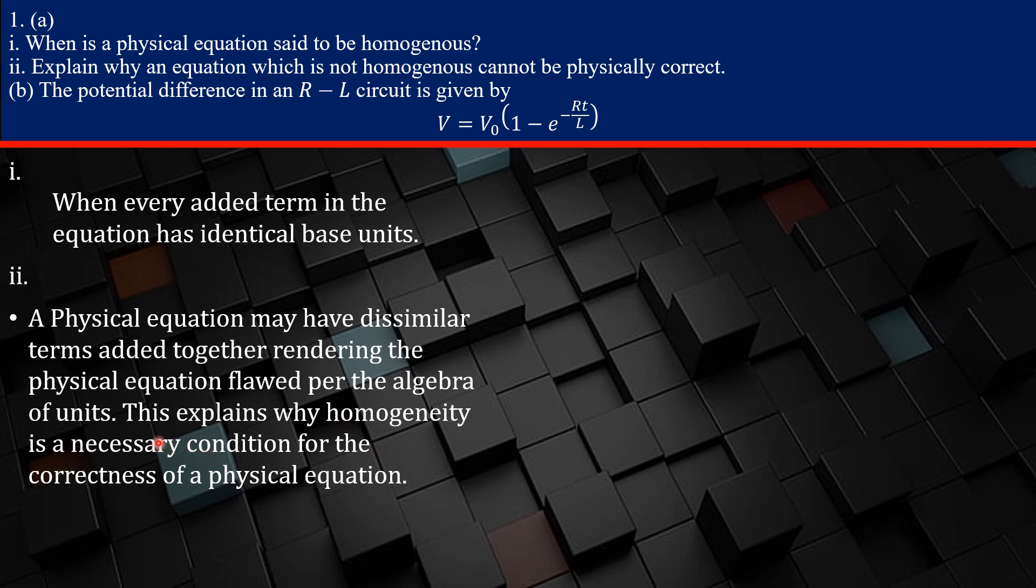So, and that is the reason why we say homogeneity is a necessary condition for the correctness of a physical equation. Because the first thing is that, hey, you want to make sure that the units are consistent in that equation. Then let's start testing now for the presence of dimensionless constants, the inability of homogeneity to test the units of trigonometric, exponential, and logarithmic functions, left out portion of the equation. But the first very fundamental thing is we want to make sure that the units are consistent.